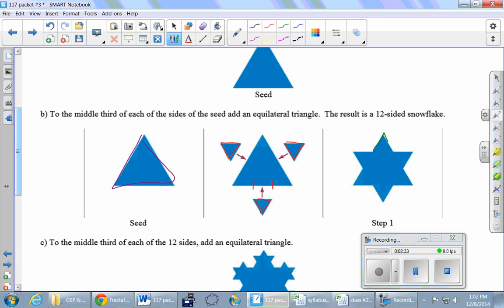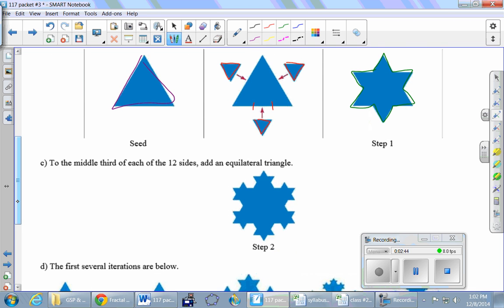Right to the middle, we add a new equilateral triangle on every side. We get this guy right over here. This has 12 sides, apparently. All of these guys count as sides. Looks kind of like a snowflake. Let's go to Megan for C.